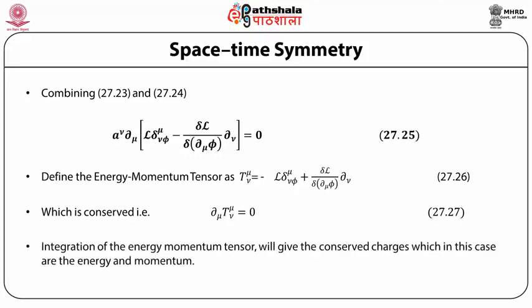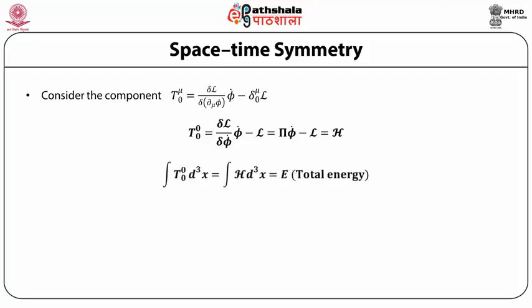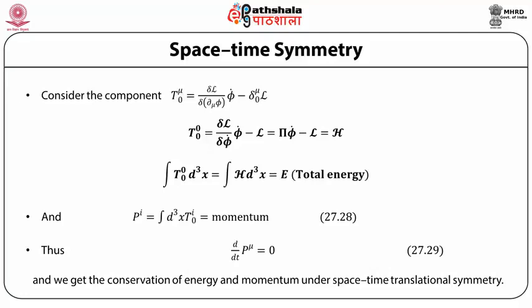Integration of the energy-momentum tensor gives the conserved charges, which in this case are the energy and momentum. The component T^{μ0}: T^{00} = (∂ℒ/∂φ̇) φ̇ − ℒ = H. So ∫T^{00} d³x = ∫H d³x = E (total energy), and P_i = ∫d³x T^{i0} = momentum. Thus dP_μ/dt = 0 and we get the conservation of energy and momentum under space-time translational symmetry.